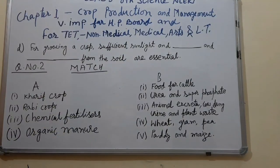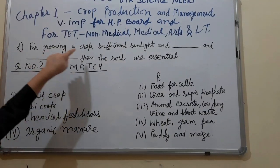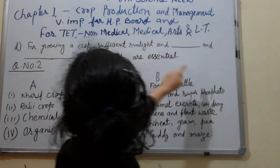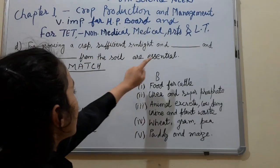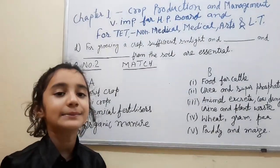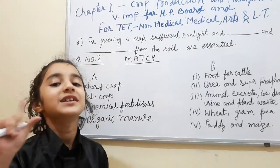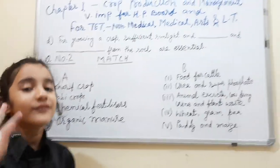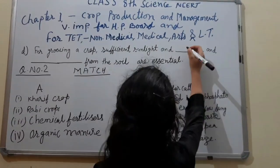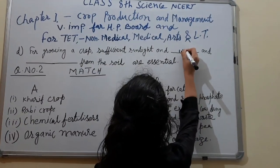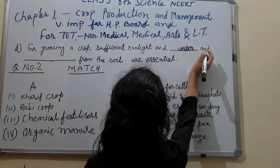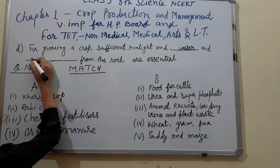Fourth question. For growing a crop, sufficient sunlight and dash and dash from the soil are essential. I'll give you 5 seconds. Your time starts now. 1, 2, 3, 4, 5. Your time is up. The answer to it is: water and nutrients.